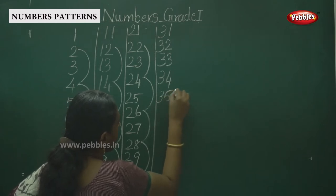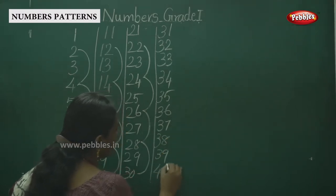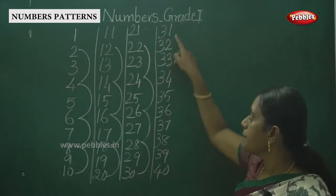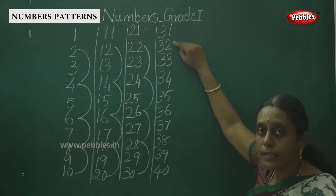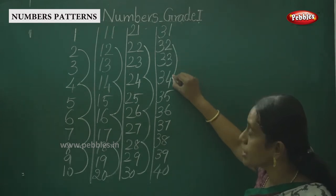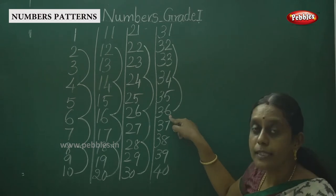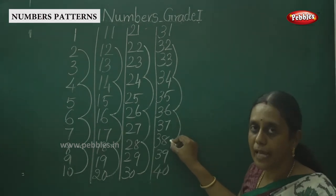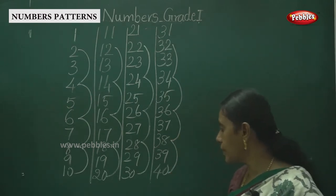Continuing: 31, 32, 33, 34, 35, 36, 37, 38, 39, 40. We finished 30, so skip the number 31 and say 32. Then skip 33 and jump over to 34. Skip 35 and jump to 36. Skip 37 and jump to 38. And finally we jump over to 40.